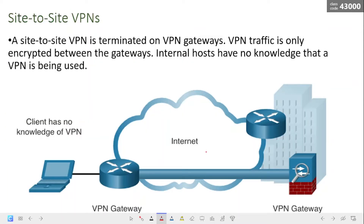The first type of VPN is the site-to-site VPN. In site-to-site VPNs, a VPN-terminating device, also called the VPN gateway, is pre-configured with information to establish a secured channel. VPN traffic is only encrypted between these gateway devices. Internal hosts have no knowledge that a VPN is being used in this configuration.